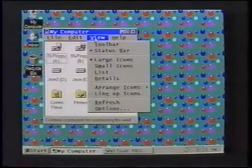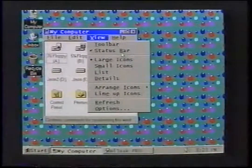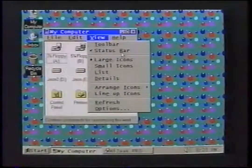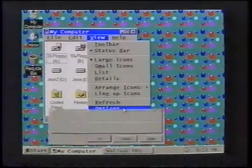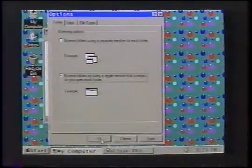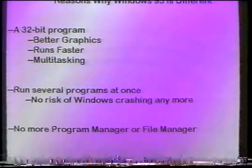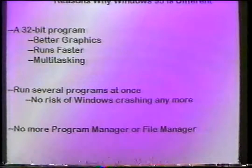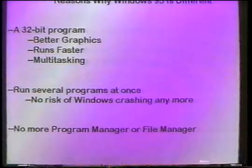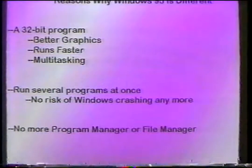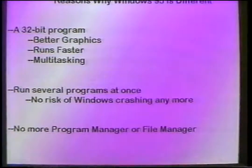There are underlined letters in menus that are shortcuts. You can use these shortcuts by pressing ALT and then the underlined letter at the same time. If you don't like a lot of windows open at the same time, you can change it so that every time you open a new folder, the contents of it will replace what's in the currently open window. Windows 95 uses a 32-bit program, which means it has better graphics, runs faster, and is multitasking — meaning you can run several programs at once without worrying about your system crashing.